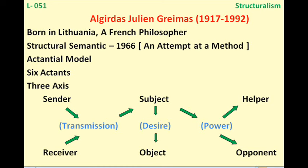In summary: the six major actants are subject, object, helper, opponent, sender, and receiver. Subject and object revolve around the axis of desire; helper and subject, as well as opponent and subject, are connected through the axis of power; and sender and receiver are both connected to the subject through the axis of transmission. This is the core of A.J. Greimas's 'Structural Semantics,' published in 1966.